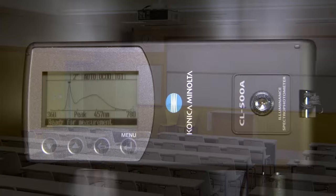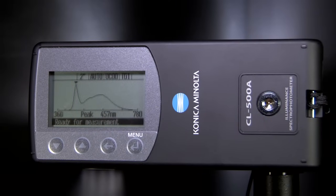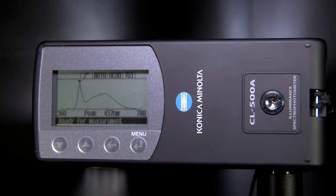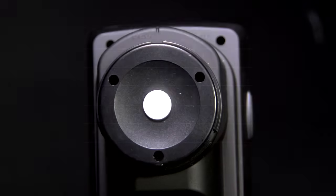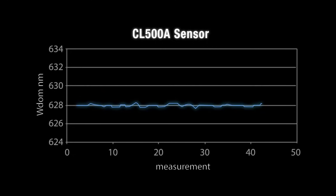The CL500A uses a 128 CMOS sensor that covers the entire visible light spectrum from 360 nanometers to 780 nanometers. The sensor is the heart of a spectrally based meter. One way cheaper instruments reduce cost is to compromise the sensor.